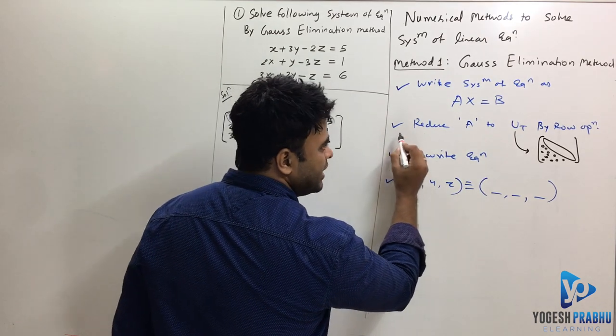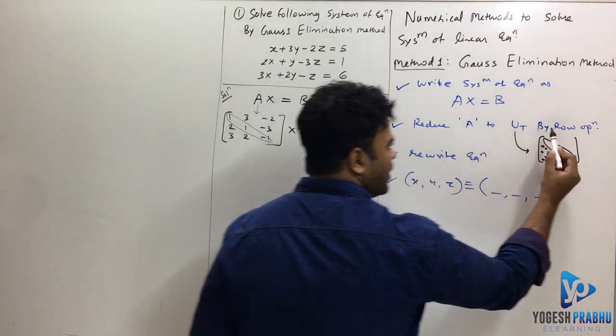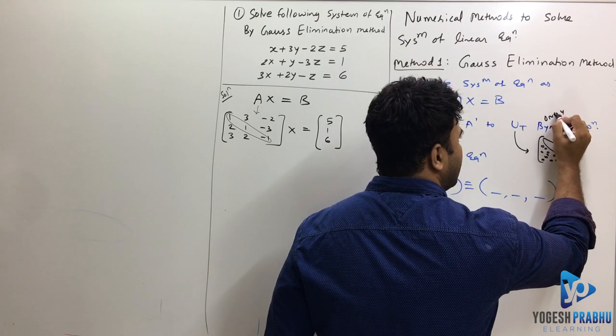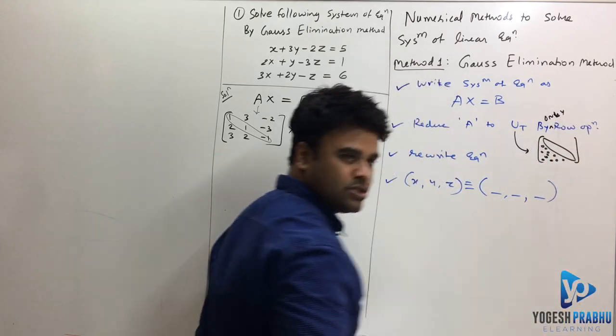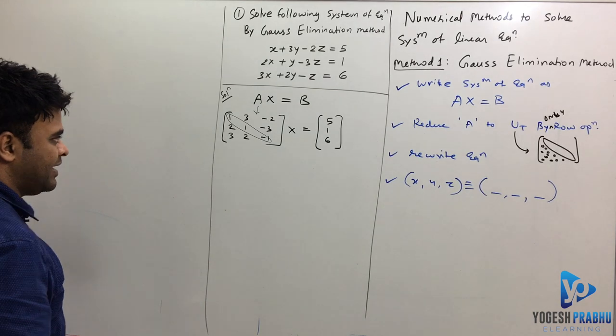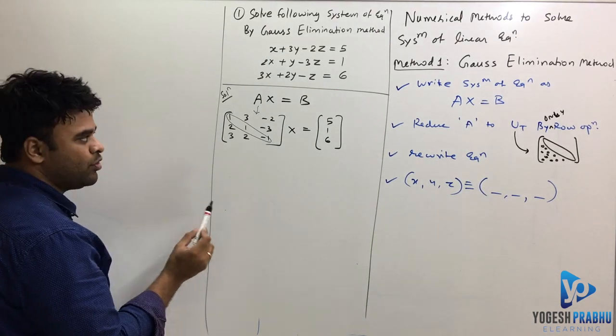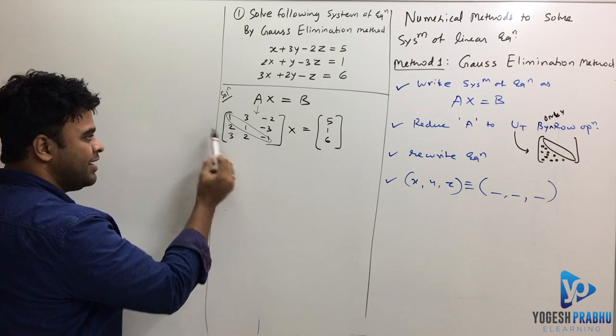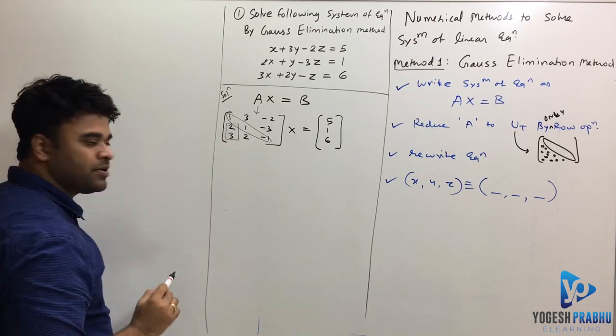So I will write down here, reduce A to upper triangular matrix. I already wrote this by only row operations. No column operations allowed. Let's simplify this. So if I have to reduce it to the upper triangular matrix, I want to make these three things 0. First, I will focus and try to make these two 0s.